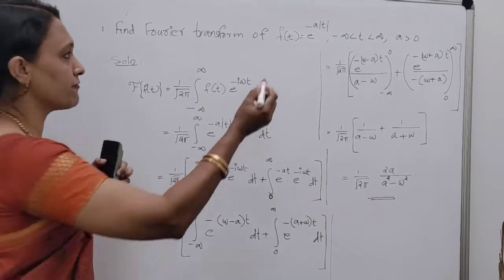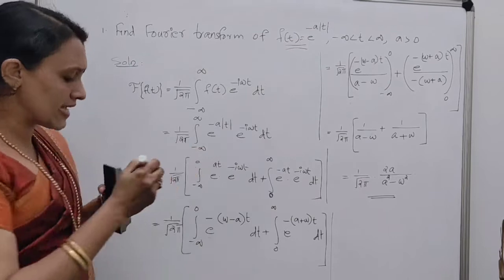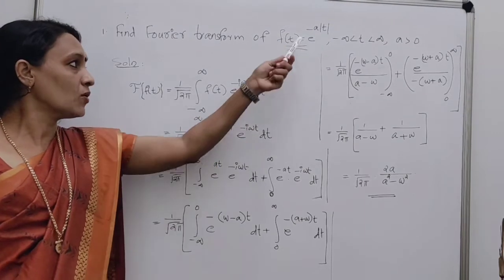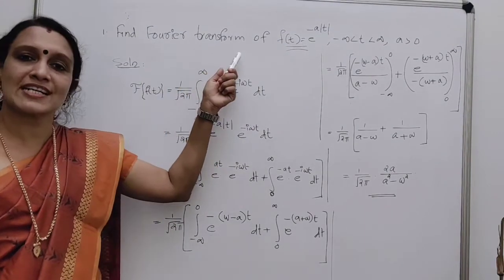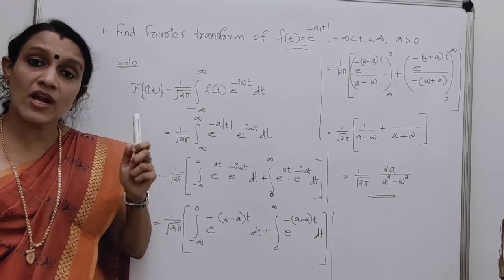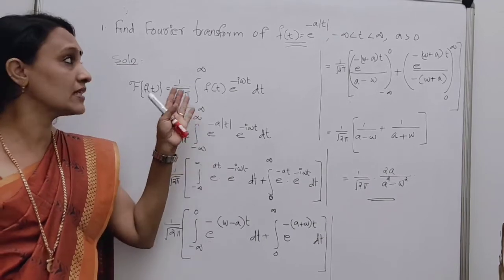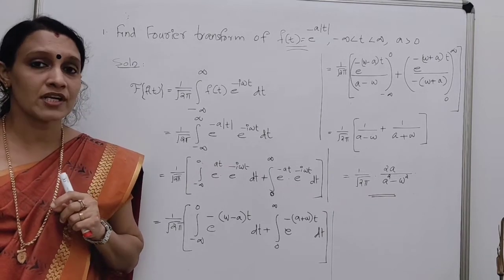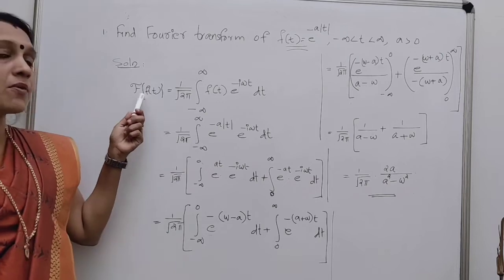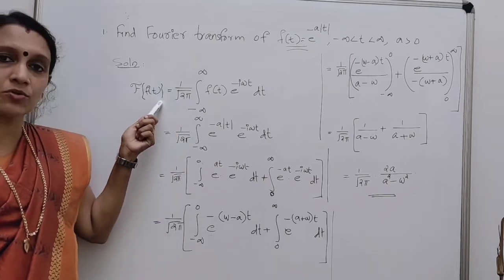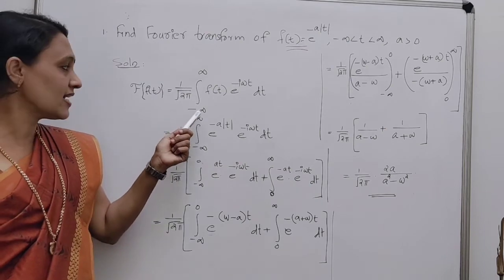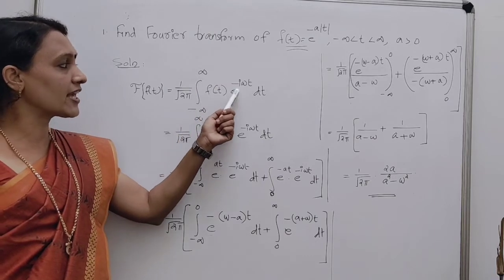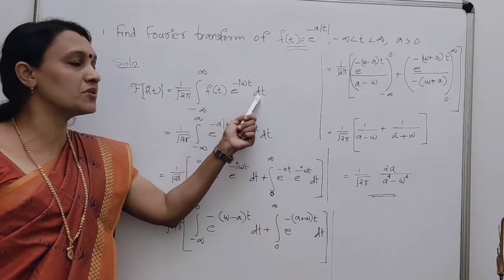The function is f(t) = e^(-a|t|). You are asked to find the Fourier transform. Whenever we have these types of questions, the first thing you have to do is write the definition of Fourier transform. By the definition, f(t) = (1/√(2π)) × integral from minus infinity to infinity of f(t) × e^(-iωt) dt.